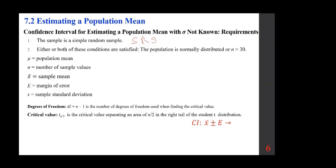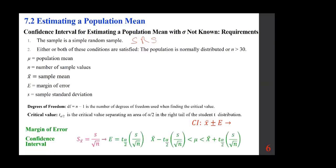The formula used is x-bar plus or minus E. The margin of error is t-alpha/2 times s over the square root of n. This quantity is called S sub x-bar. We add and subtract E to get the confidence interval. The key point: sigma is not known, so we use the t-distribution instead of z.